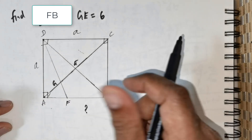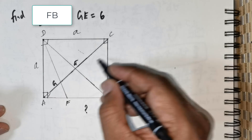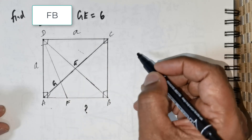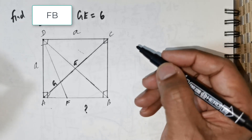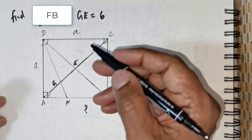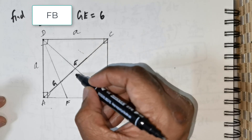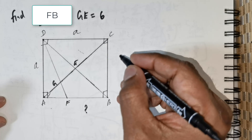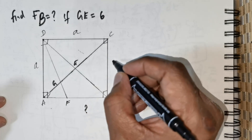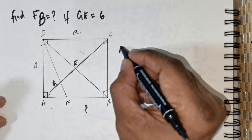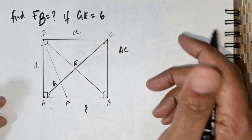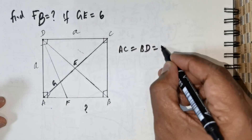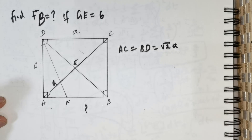Now since this is a square, the length of the diagonal is going to be root 2 times A — that is by formula. If you are going to be utilizing Pythagoras, you are still going to end up with root 2 times A. So AC is equal to BD and that is going to be equal to root 2 times A.